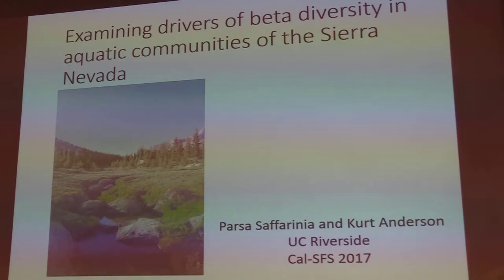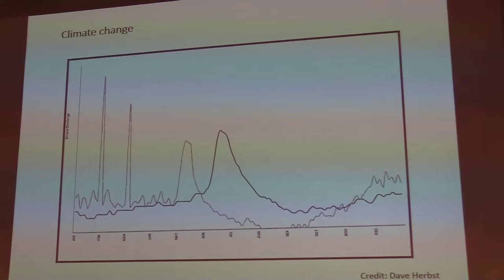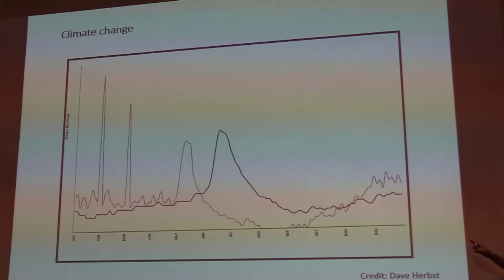I wanted to start our talk off today with a hydrograph that synthesizes some flow models that have been circulating for the past couple years. This was adapted from some work Dave Herbst has done. The black line here synthesizes a historical hydrograph and the gray one represents more current and expected flow conditions in the Sierra Nevada Mountains in California.